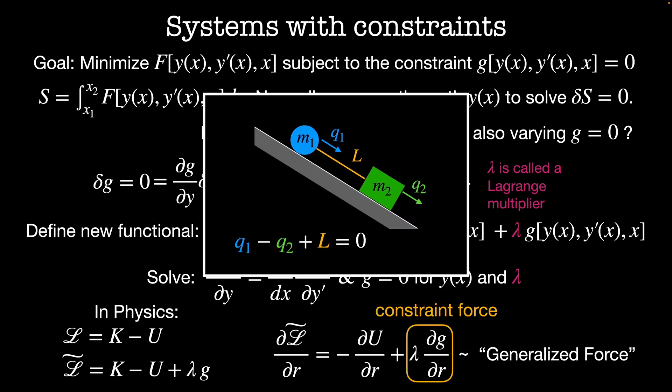In our example system, the constraint that keeps the two particles separated by distance l can be written as q1 minus q2 plus l is equal to zero. Since we have a constraint, we need a force to enforce that constraint. The constraint here is the tension in the rope required for these two blocks to slide in unison.